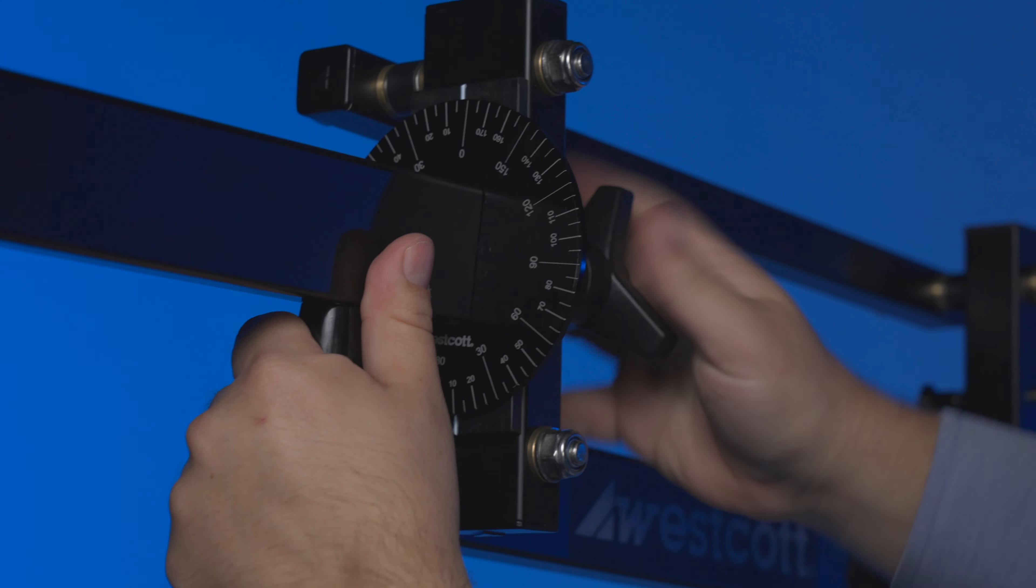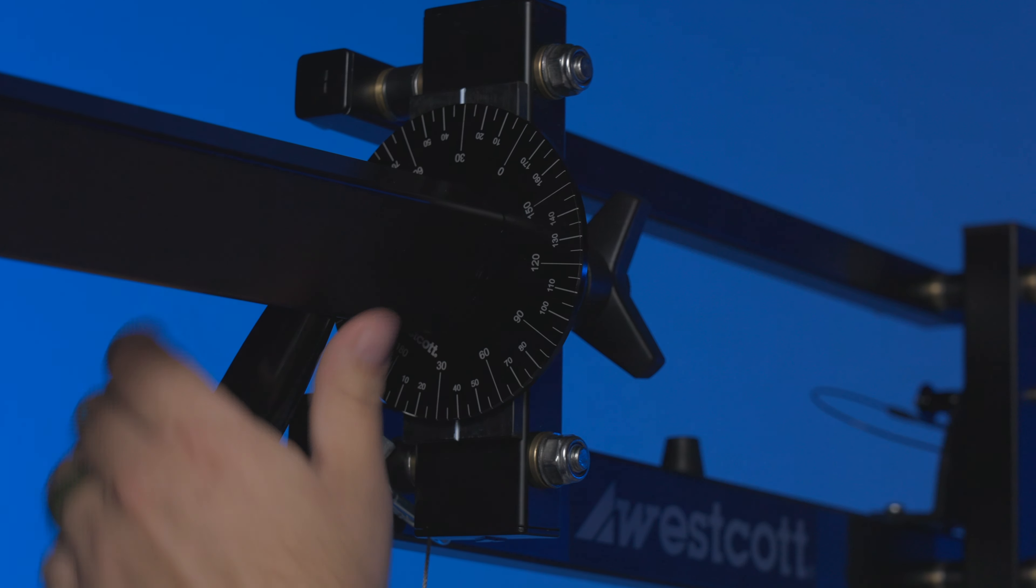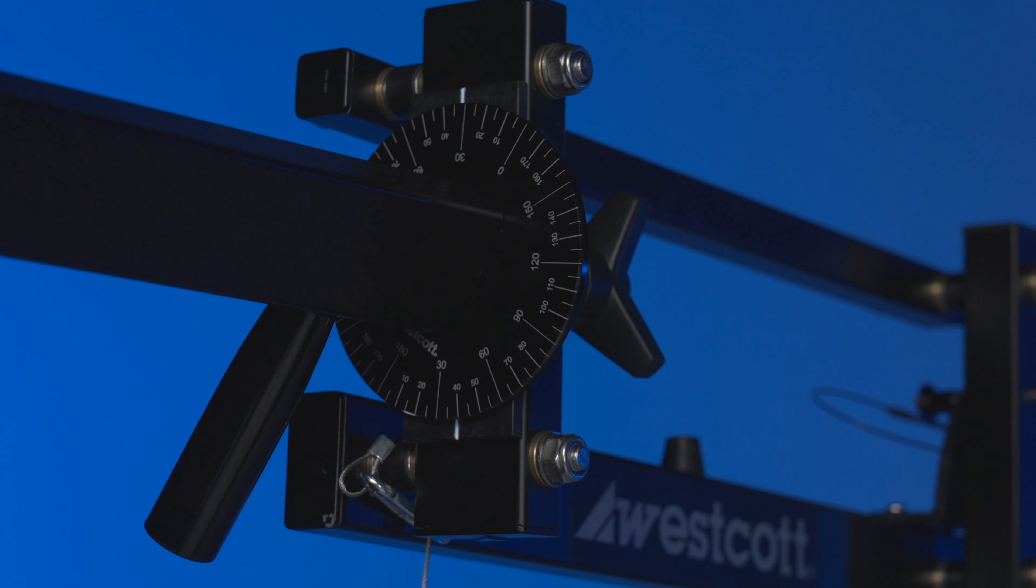Using the handle, slowly rotate the extension arm to your desired position. Once in position, rotate the knob clockwise to tighten and lock the extension arm in place. Do not over tighten.